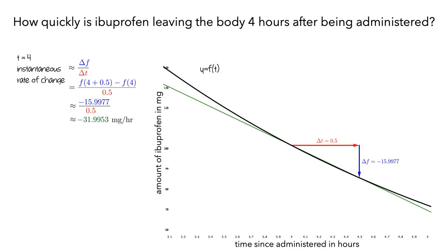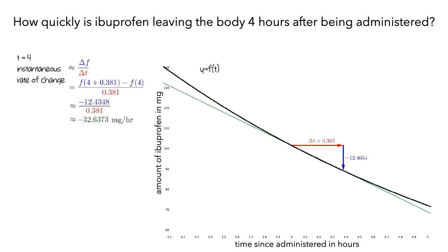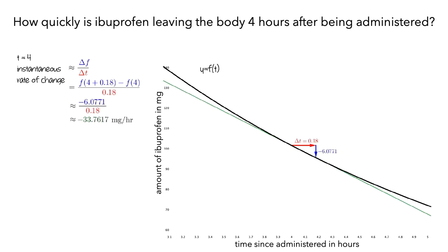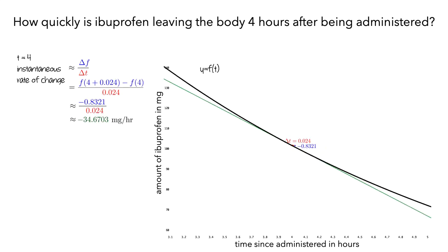To get a better approximation, let's look at some smaller intervals of time. As we use smaller and smaller time intervals, the graph of f over those intervals looks straighter. When our interval is small enough, the amount of ibuprofen varies at essentially a constant rate with respect to the elapsed time over that tiny interval. And as we make the interval smaller, the slope of the secant line approaches the slope of the tangent line.